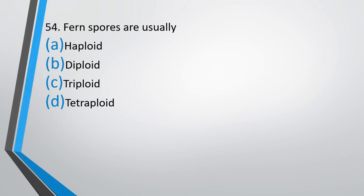Question number 54: Fern spores are usually — option A: haploid, option B: diploid, option C: triploid, or option D: tetraploid. The correct answer is option A, it is haploid.